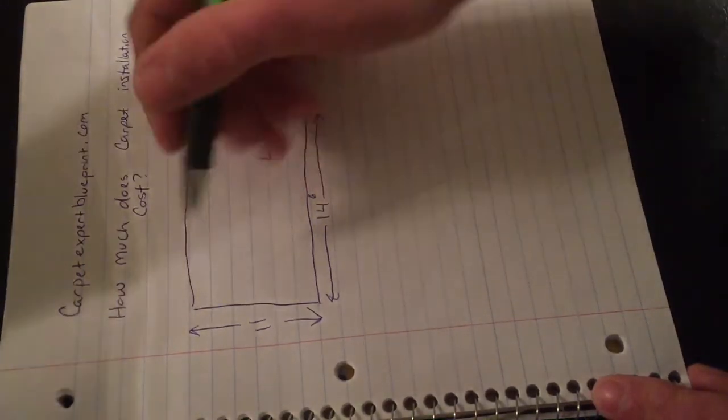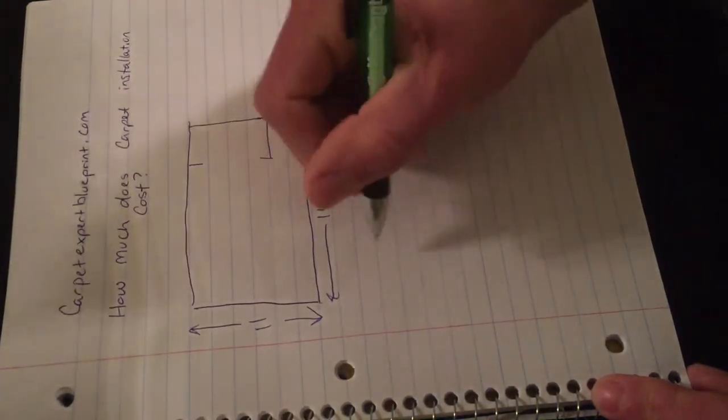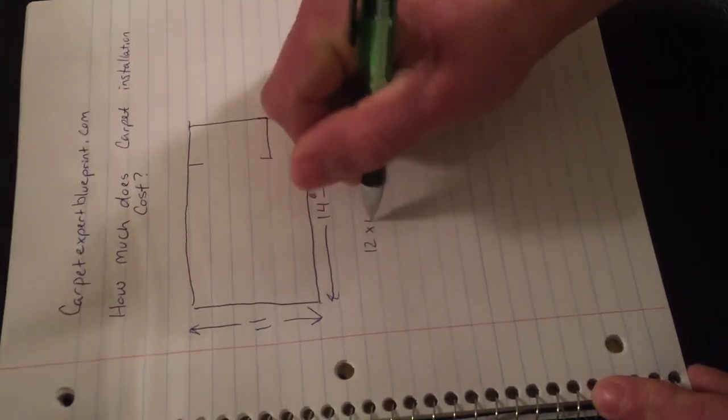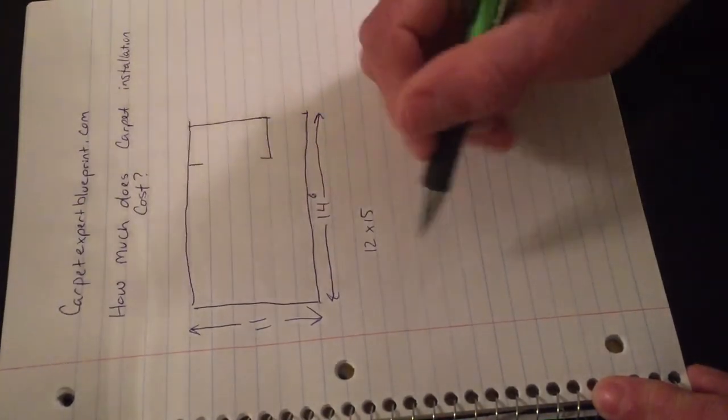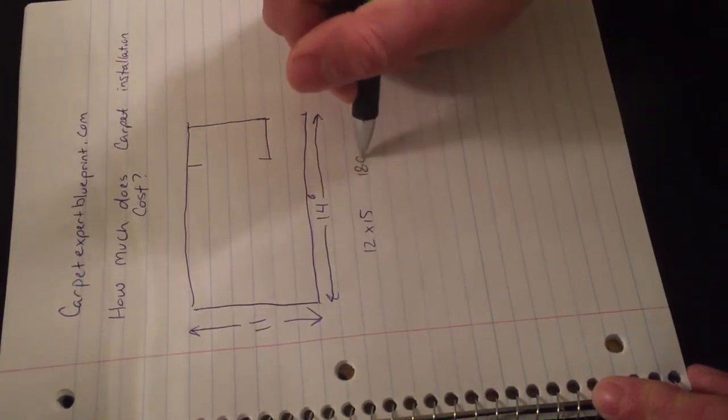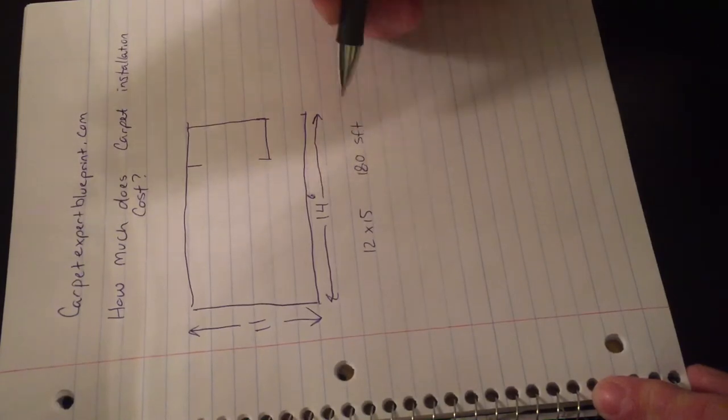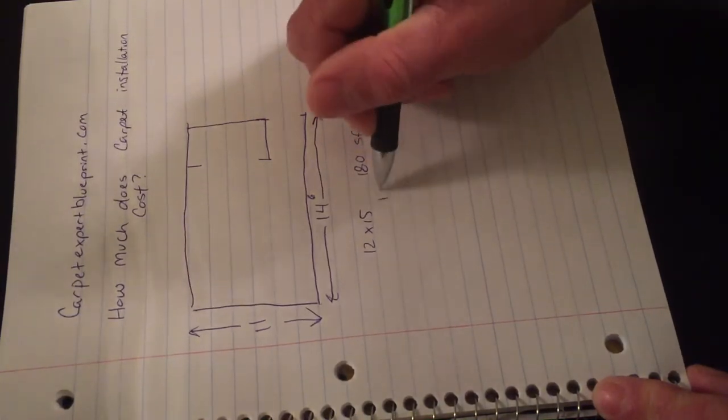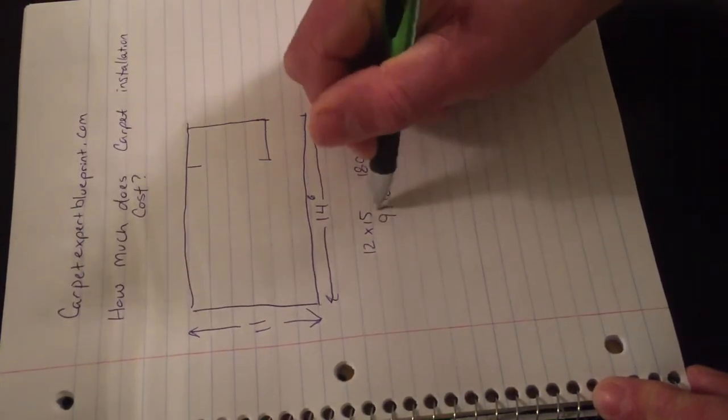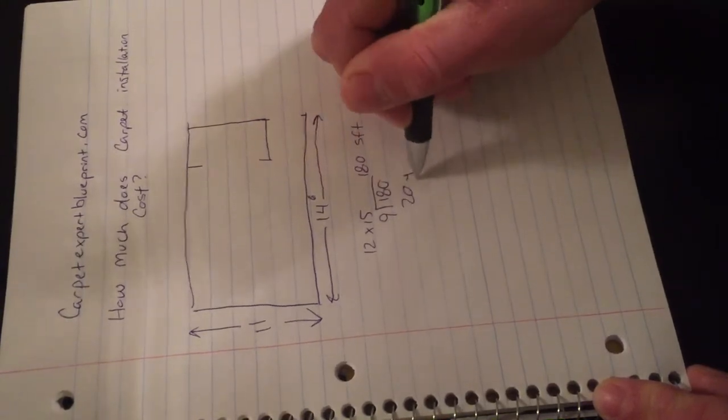Now to fit an 11 by 14 6 you'll actually need to order a 12 by 15 piece of carpet. Now 12 by 15 converts to 180 square feet and if you divide that by 9 to figure out the square yardage, 180 divided by 9, that's going to be 20 yards.